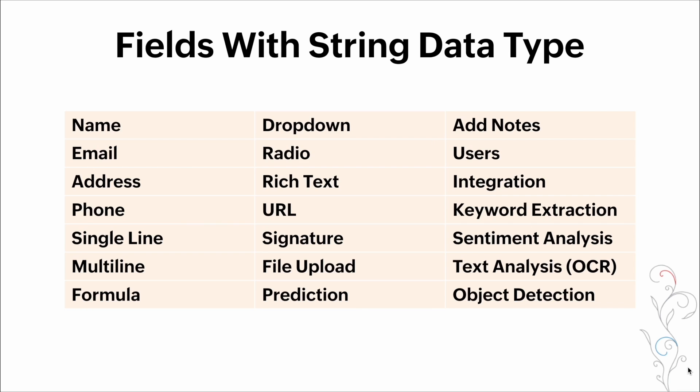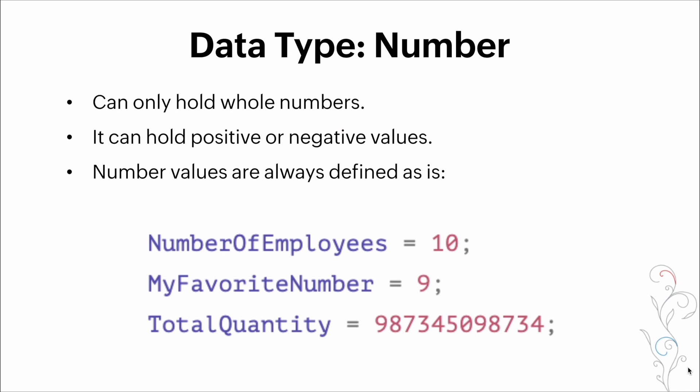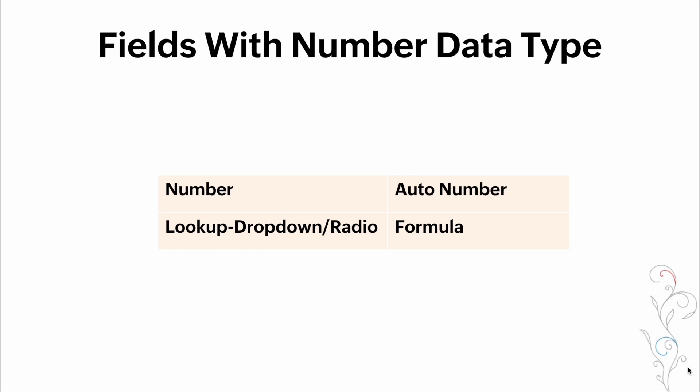The next data type is a number data type. These can only hold whole numbers. It can hold positive or negative values and number values are always defined as is. These are some fields with a number data type: number, look up, drop down, radio out of number, or formulas.